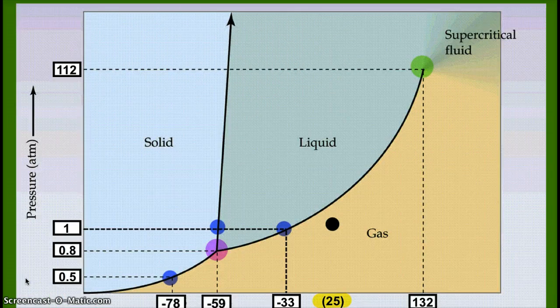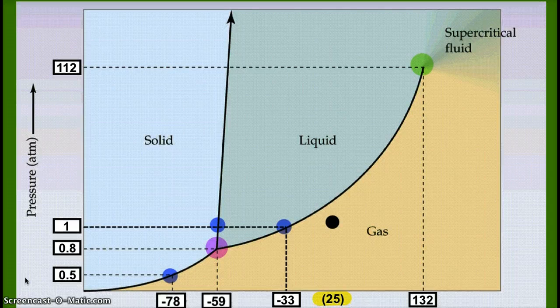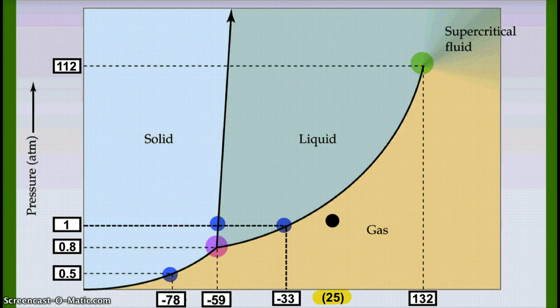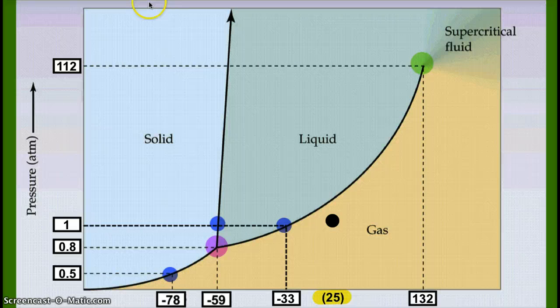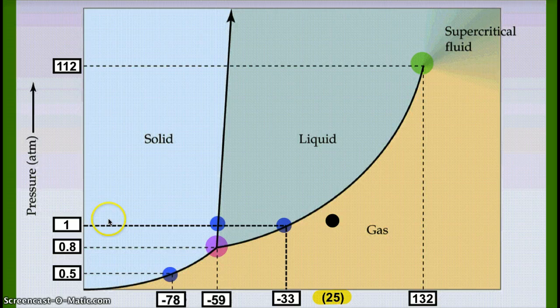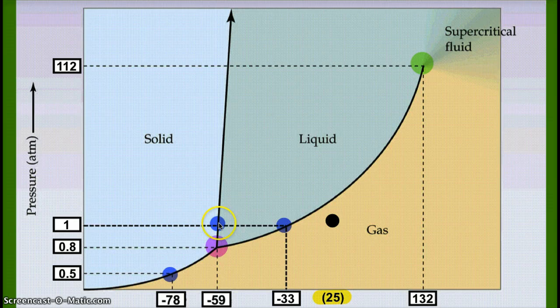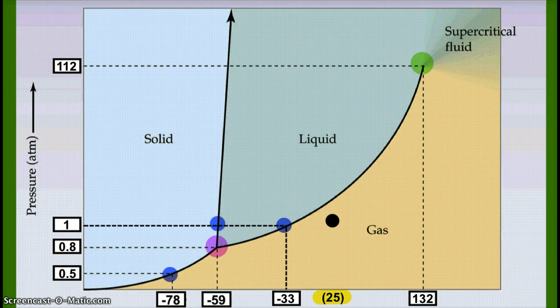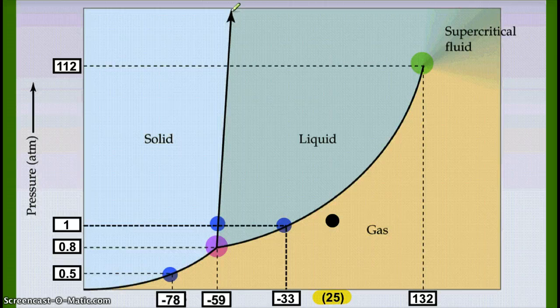We can say for a couple different reasons why we know this isn't the phase diagram for water. First off, you might say, I know the boiling point and freezing point for water. At one atmosphere of pressure, when I come down here between solid and liquid, if that was water, that should be zero degrees Celsius. It's not. It's negative 59. And boiling liquid to gas, this boiling point should be 100 degrees Celsius for water. It's not. It's negative 33.